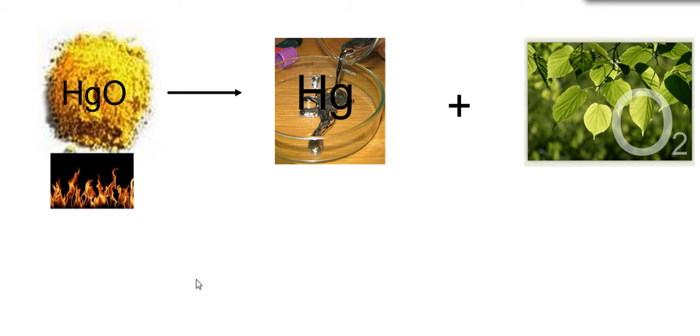And right off the bat, by looking at the equation, you could say, well this doesn't make a lot of sense. Where did this other oxygen come from? And the simple answer is, because oxygen is diatomic, it's never by itself.